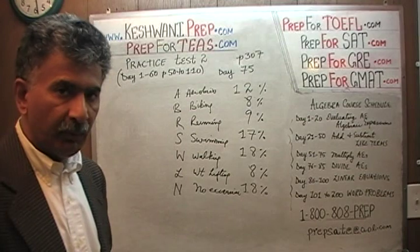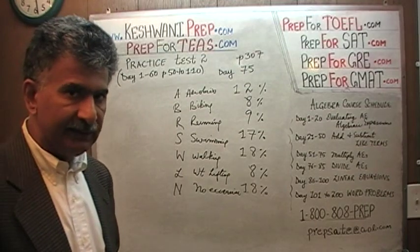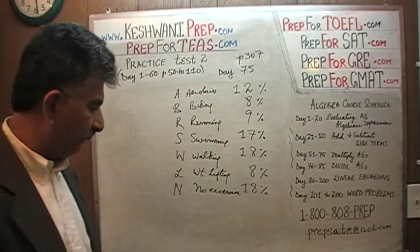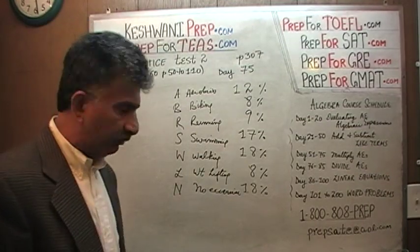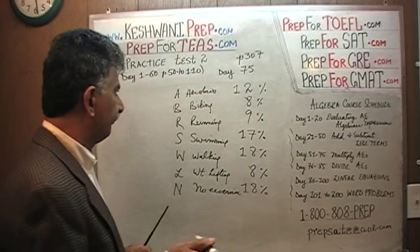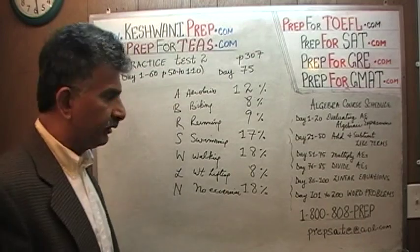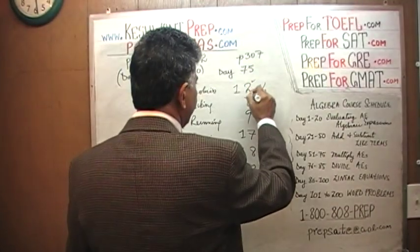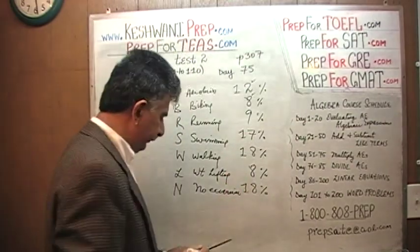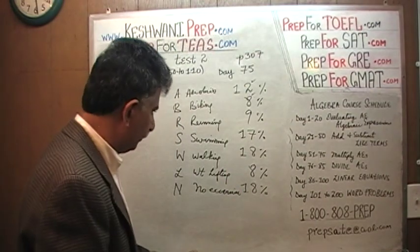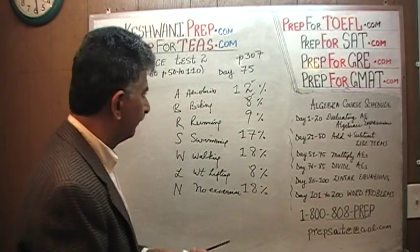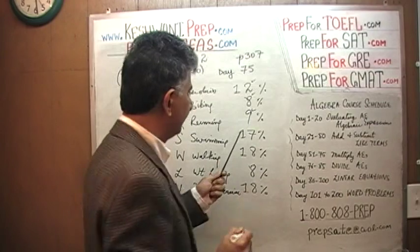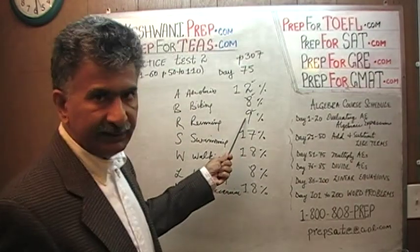Now what I want you to do is add these categories up slowly. Okay, watch what happens — let's do it together. 12 plus 8 is 20. 20 plus 9 is 29. 29 plus 17...